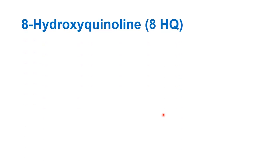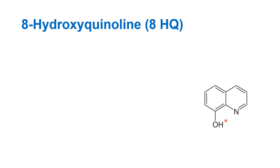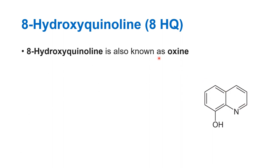In this experiment, we are going to make use of 8-hydroxyquinoline to precipitate aluminium. 8-Hydroxyquinoline is also represented as 8-HQ and is a popular reagent used to precipitate aluminium. This is the structure of the molecule — it is an organic molecule, a quinoline derivative. It is also called oxine (O-X-I-N-E). When the word oxine is mentioned, we must remember it is 8-hydroxyquinoline that is being talked about.